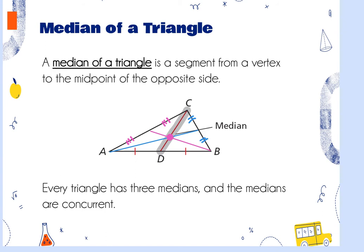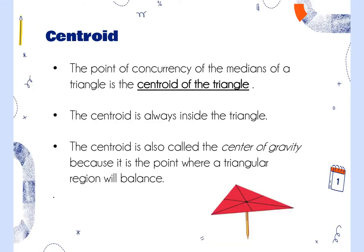The point of concurrency of the medians is called the centroid. So: perpendicular bisectors → circumcenter; angle bisectors → incenter; medians → centroid. Just like the incenter, the centroid is always inside the triangle. The centroid is also known as the center of gravity — it's the point where a triangular region will balance. If you wanted to hold up a triangular shape on one post, you'd put it at the centroid and it would balance completely.